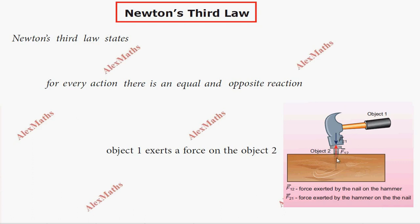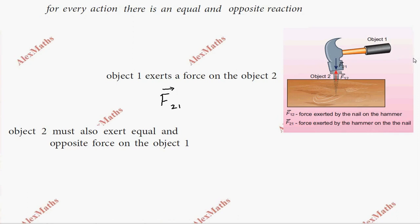When object one exerts a force on object two, that force is denoted as F21 vector. Object two then exerts an equal and opposite force on object one.